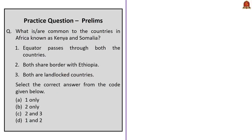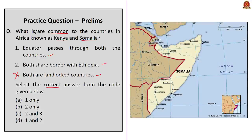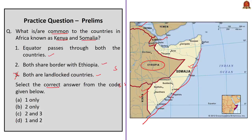Let's take up this practice prelims question: 'What is or are common to the countries in Africa known as Kenya and Somalia? (1) Equator passes through both countries. (2) Both share a border with Ethiopia. (3) Both are landlocked countries.' The first two statements are correct and the third is incorrect. The equator passes through Somalia, Kenya, Uganda, Democratic Republic of Congo, Congo, Gabon, and São Tomé and Príncipe. Ethiopia is a landlocked country and shares borders with Somalia, Kenya, South Sudan, Sudan, Eritrea, and Djibouti. Somalia and Kenya are not landlocked — they share a border with the Indian Ocean. Correct answer: option D, one and two only.